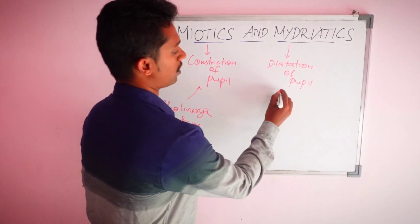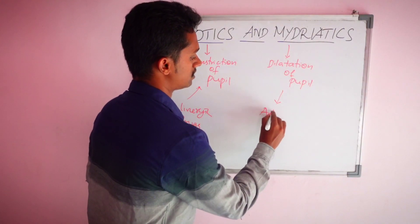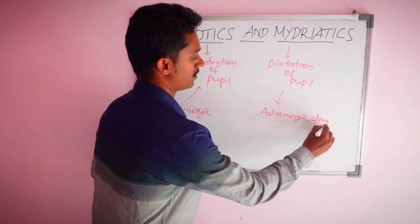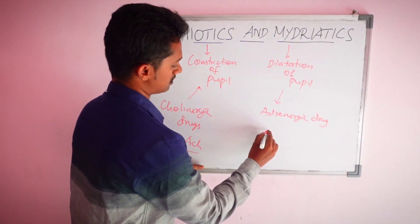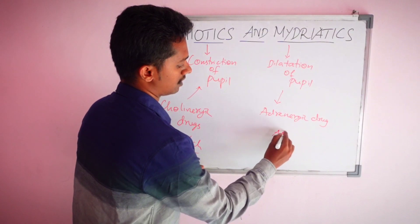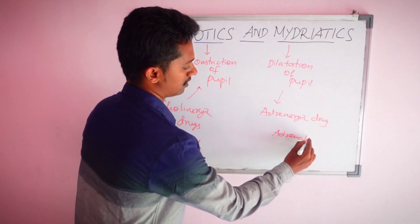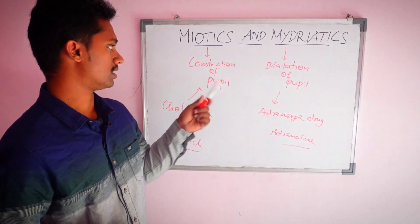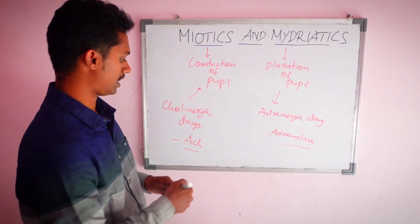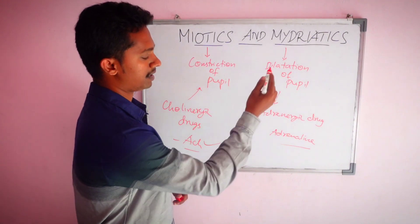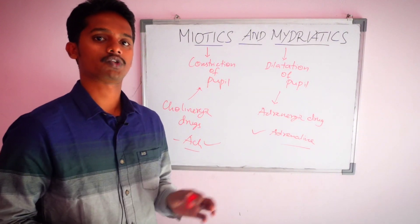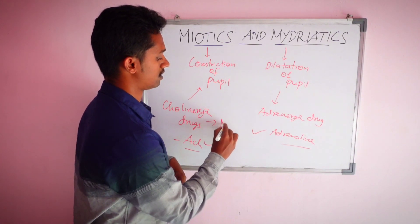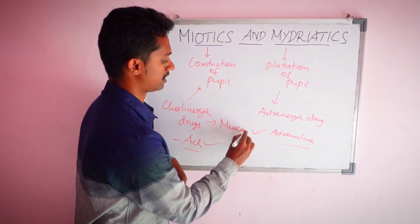This category is called cholinergic drugs, and the other is called adrenergic drugs. Adrenergic drugs involve adrenaline or noradrenaline. Miosis is produced by cholinergic drugs acting on cholinergic receptors, particularly the muscarinic receptor.